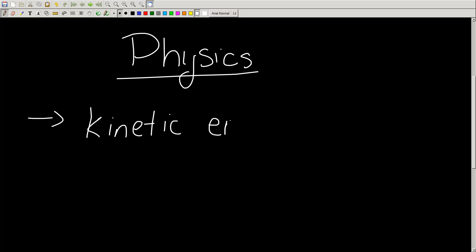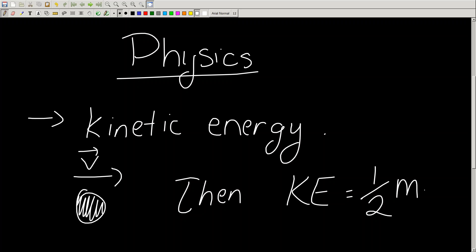Now, kinetic energy is a form of energy that is stored by a moving object due to its motion. So for example, if I have a ball and it's moving at some speed v or velocity v, then its kinetic energy KE is equal to one half mv squared, where m is the mass of the object.